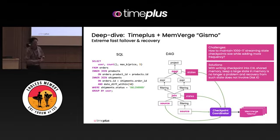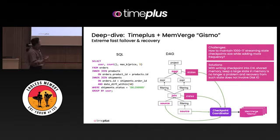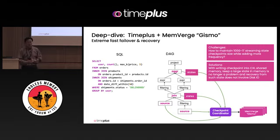The checkpoint coordinator handles all the state management. The challenge is when the state gets huge — like a hundred gigabytes or even terabytes. That's really a very big challenge: how to keep very high performance or low latency when writing state. That's one of the biggest challenges for stream processing.